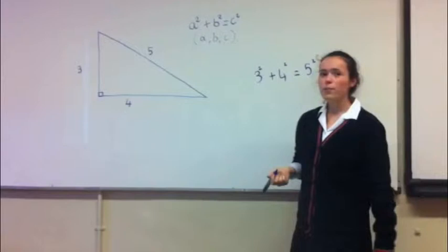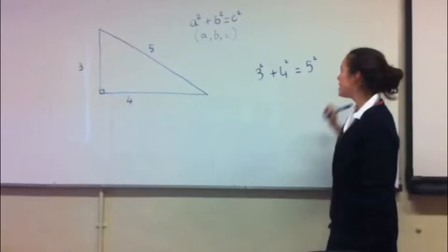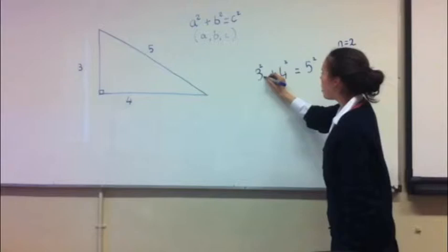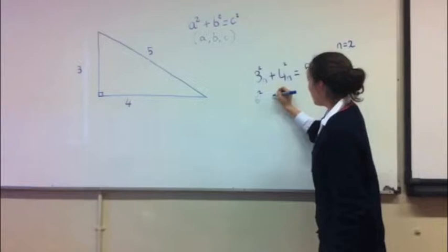To find another Pythagorean triple, we have to times them all by the same number. Let's, for example, take n as a number that we're timing them by and make n equal two. If we times them all by n, we get the equation six squared plus eight squared equals ten squared.